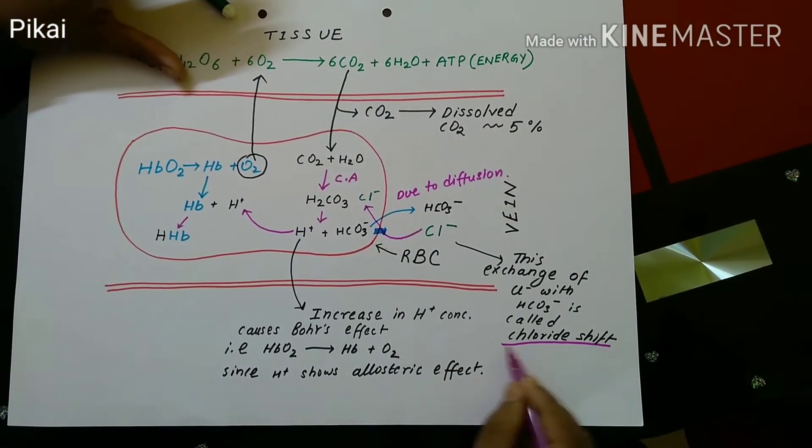So this was all about chloride shift. Let's talk about Hamburger's phenomena. So what happens with Hamburger's phenomena is that the movement of water takes place from the plasma inside the RBC. Why? Due to the accumulation of HCO3- ion. The HCO3- ion diffuses from RBC into the blood plasma but not the whole part diffuses out. So due to the retention of some amount of HCO3- ion inside the red blood cell, the water moves from the blood plasma inside the red blood cell and this causes swelling of